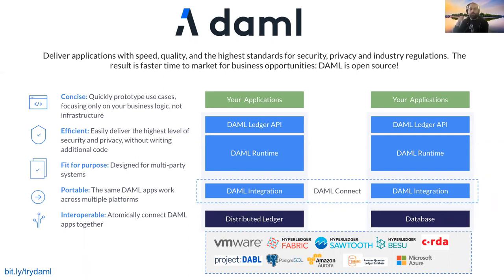DAML is also becoming much more interoperable. We have another part of our tech stack called Canton that is essentially going to enable different disparate ledgers. So if you have a Sawtooth node and a Fabric node and you have a DAML application, you'll be able to get communication between both your Fabric and Sawtooth nodes via your DAML application. You can try it out now at canton.io, though I wouldn't say it's ready for production in all cases right now.